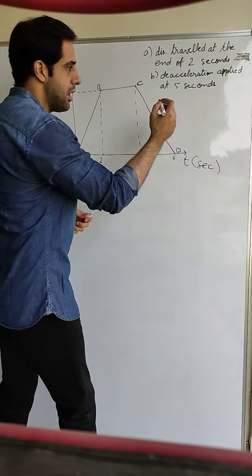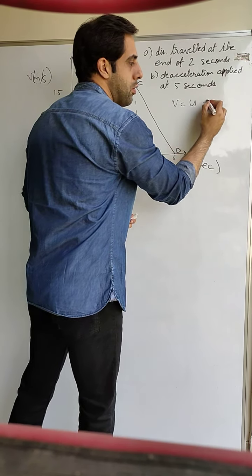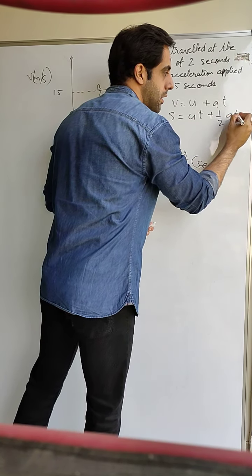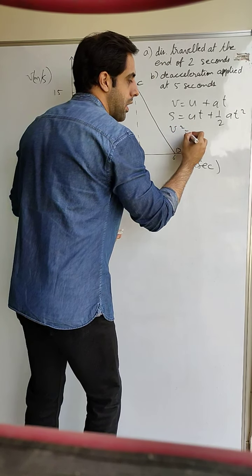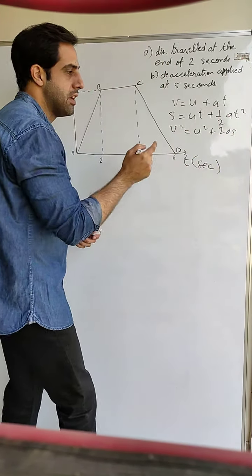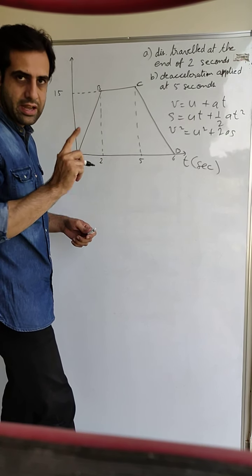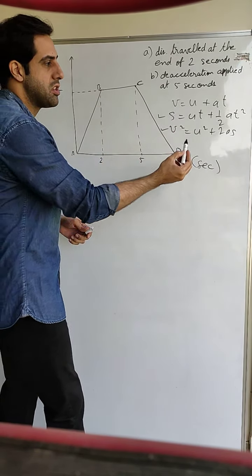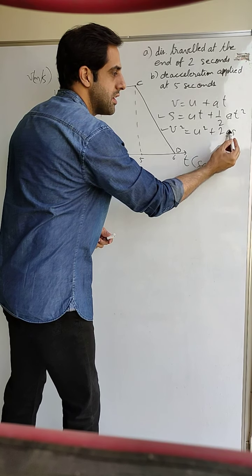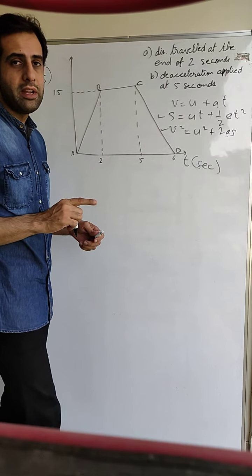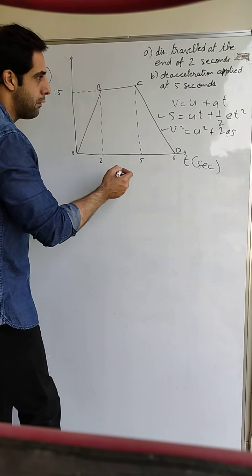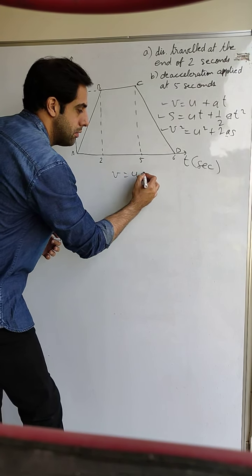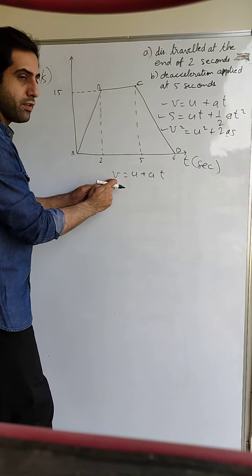We have three equations of motion: v = u + at, s = ut + ½at², and v² = u² + 2as. Since we have to find the distance s, we will need these two equations. Both equations contain the quantity a (acceleration), so we must first find the acceleration. We will find acceleration using the first equation of motion: v = u + at.